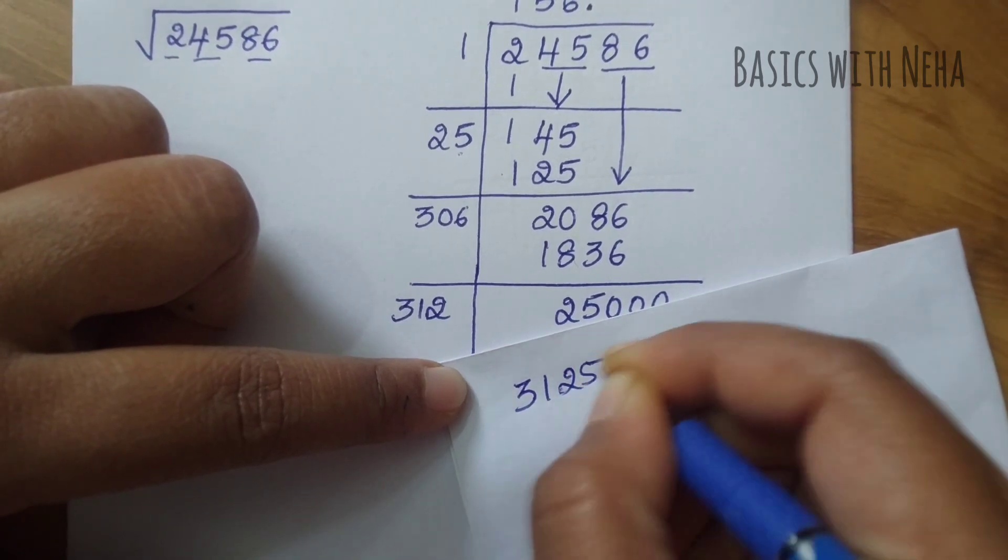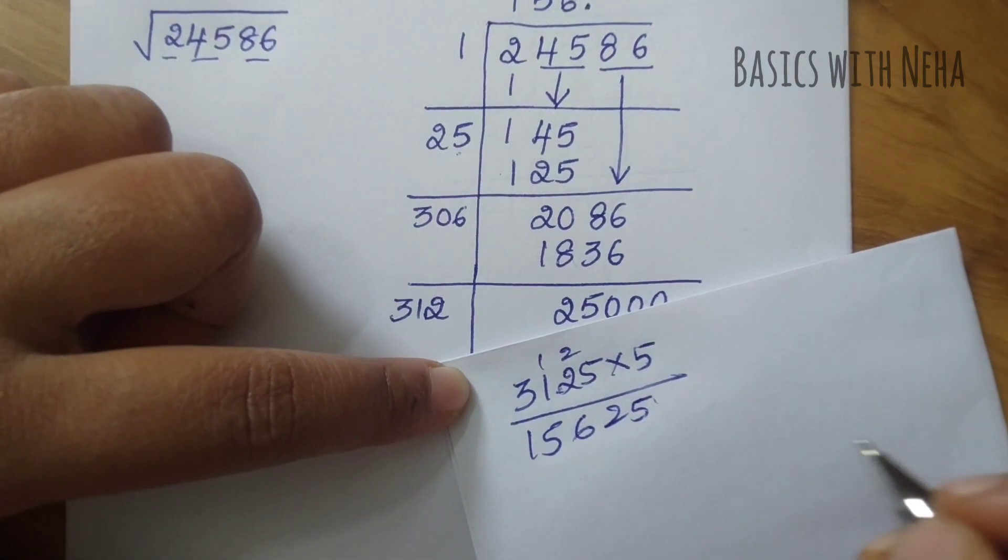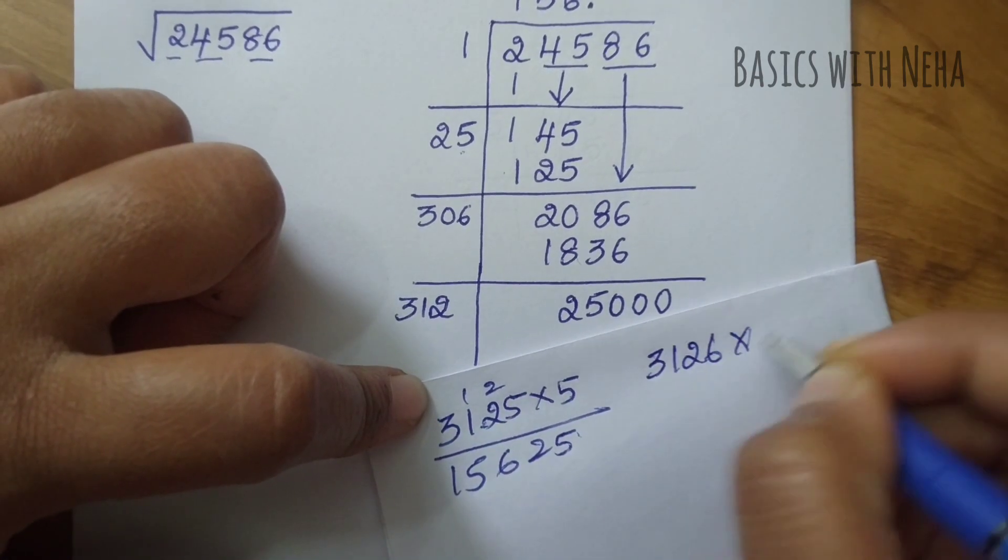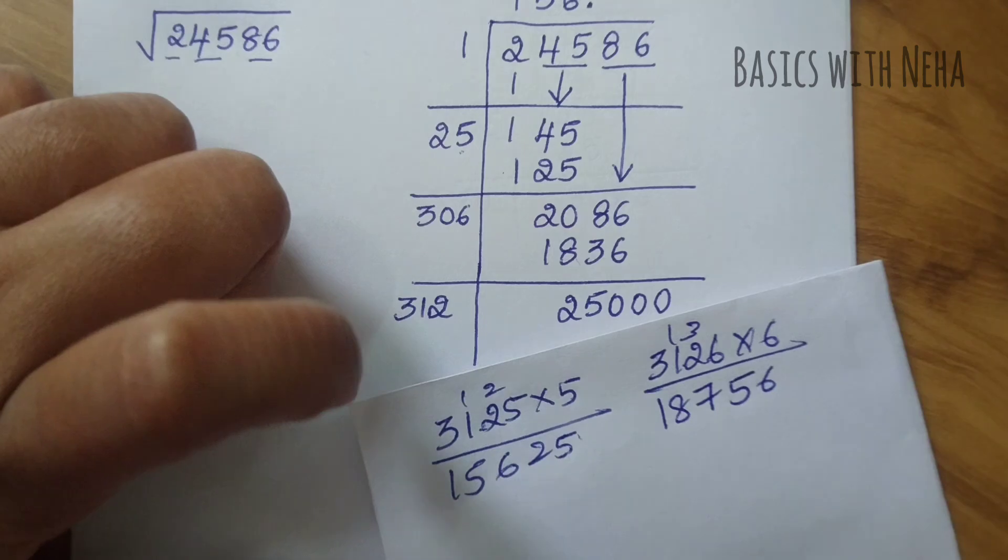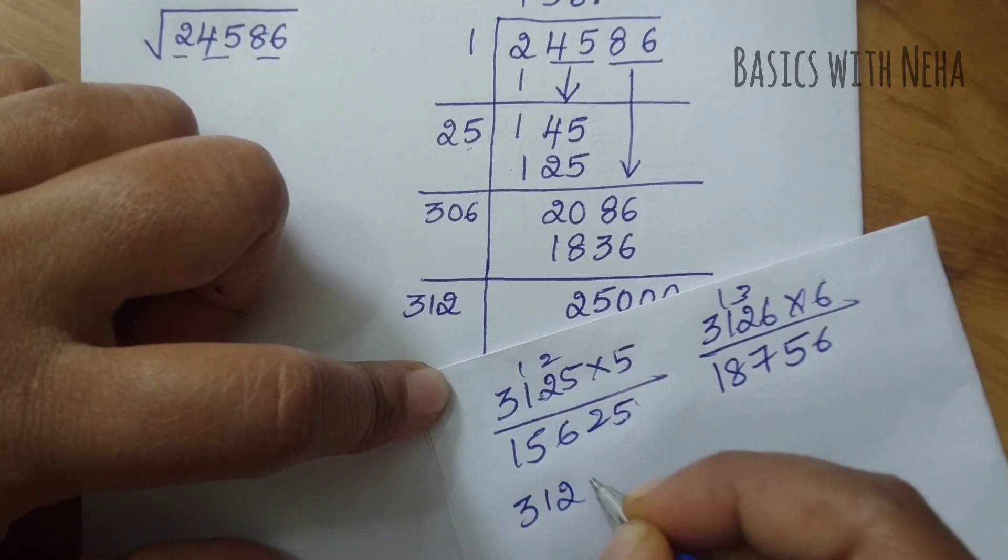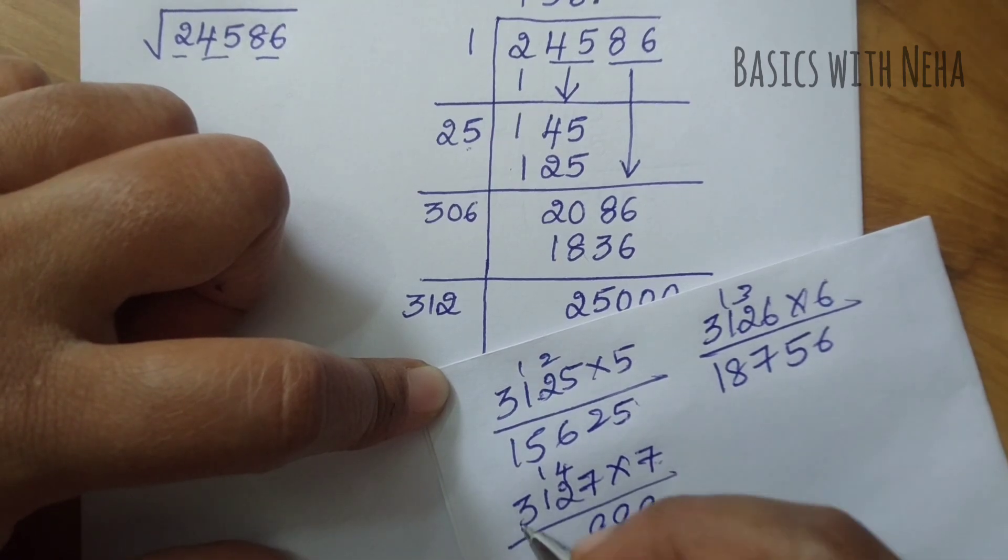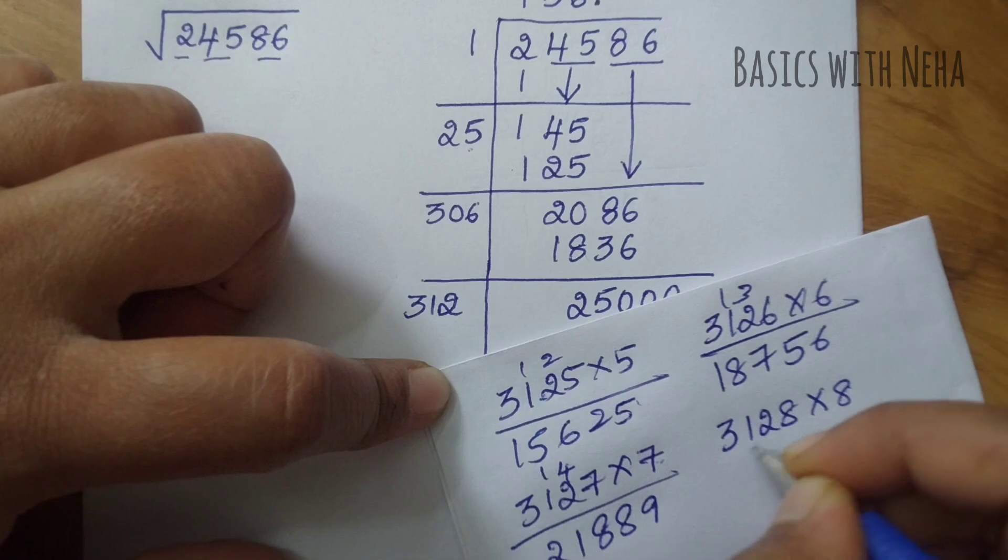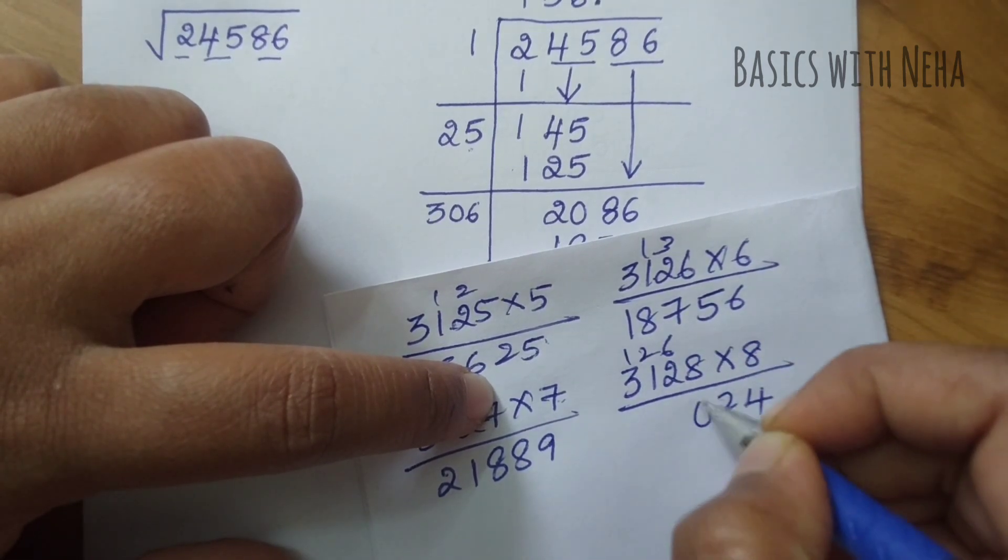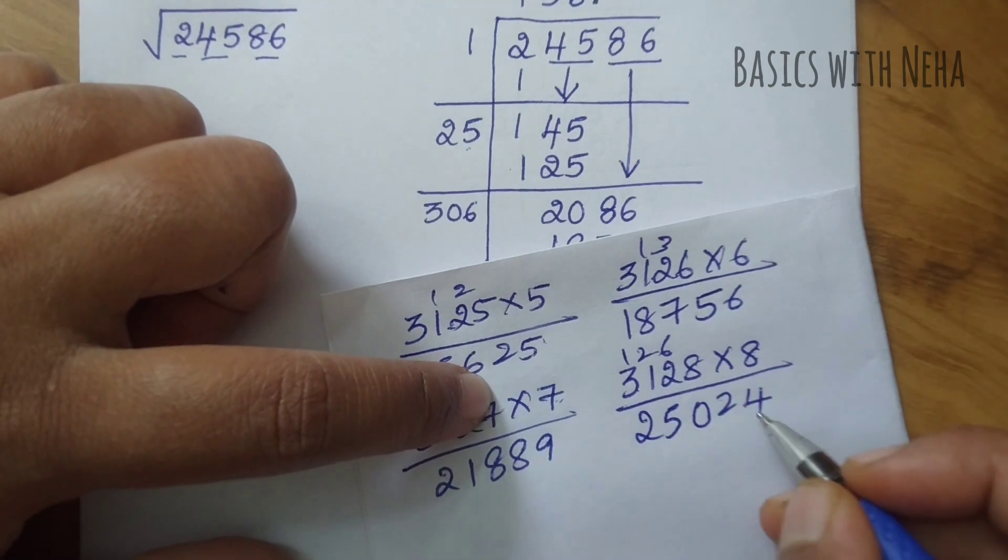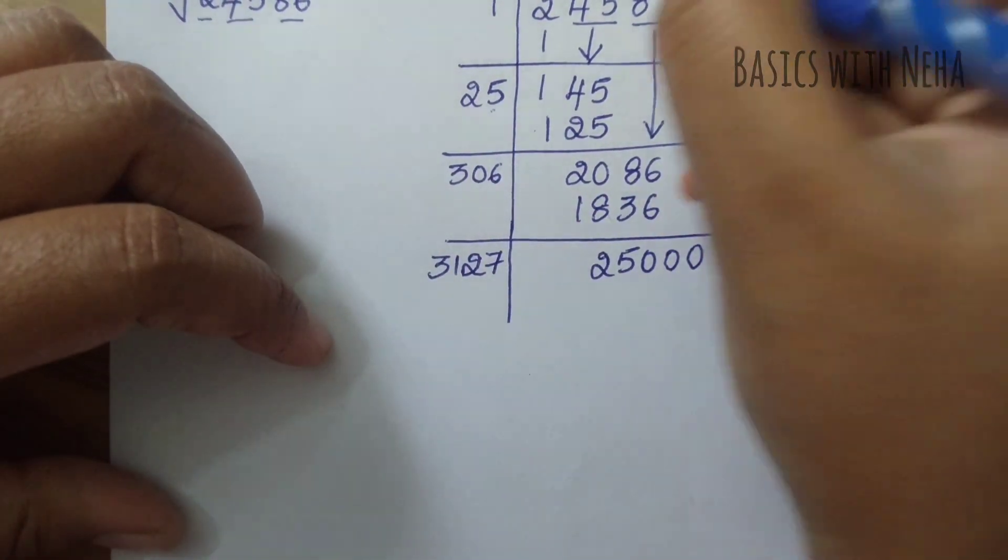Let's check. 3125 into 5 is 15625, which is much smaller than 25000. Let's try 3126 into 6, that's 18756. Let's try 3127. If we try 3128 into 8, that becomes 25024, which is larger. So let's take 3127 into 7, which will give me 21889.